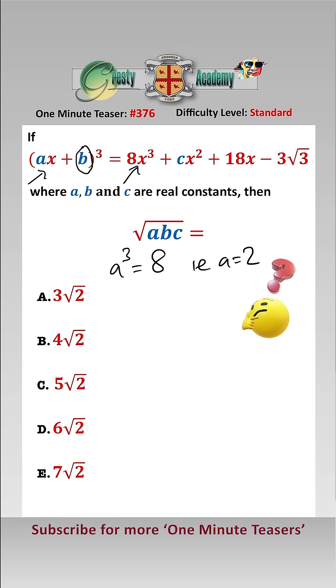And looking at the constant coefficient, we have that b cubed equals minus 3 root 3, i.e., b equals minus root 3.